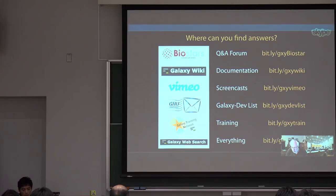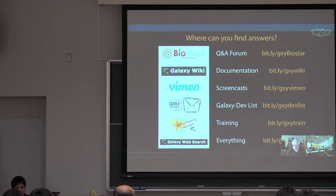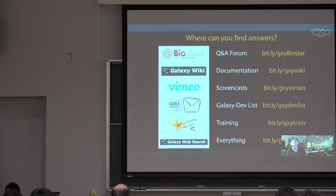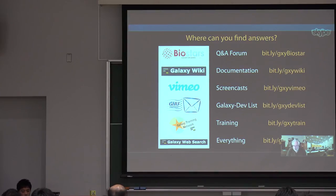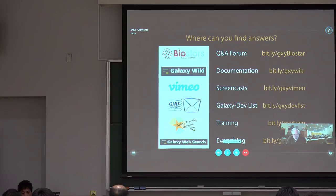The first question a lot of people have is: where can you find answers to questions? In Galaxy there are a number of ways to do this, a number of places to look. We have a question and answer forum, Galaxy Biostar, which is built on top of the Biostar platform. We also have lots of documentation on the Galaxy Wiki. We have screencasts on a Vimeo channel, and we have the Galaxy Dev List, which is a mailing list for questions